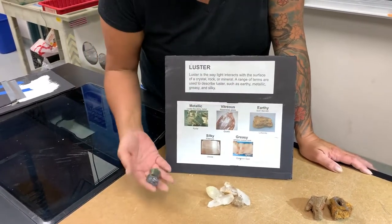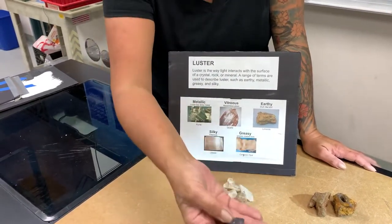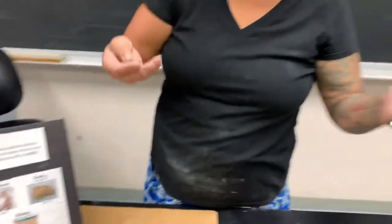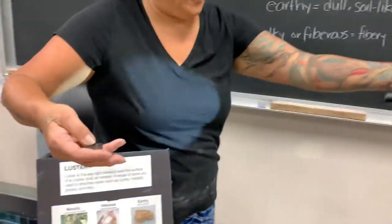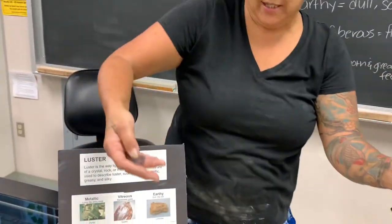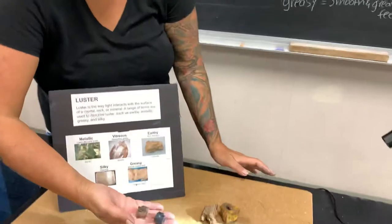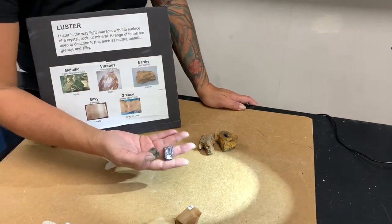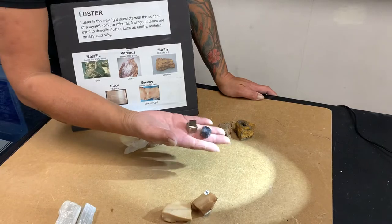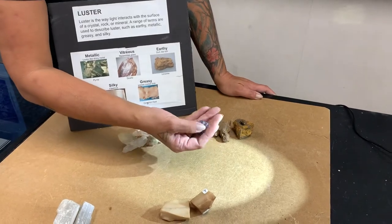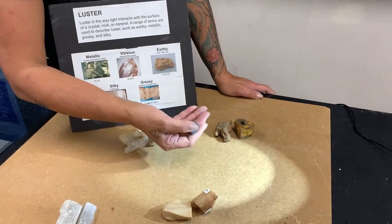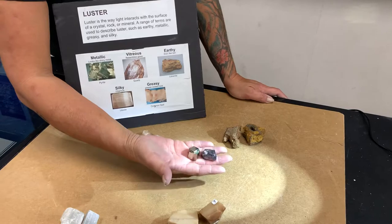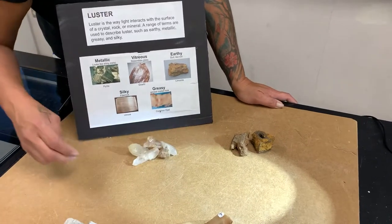Let's start with metallic. Let me get the light shining a little bit brighter so we can see this better. It just looks like a coin — whether it's silver or gold, it could be brass — anything that has a metallic look about it. That is the metallic luster we're talking about.